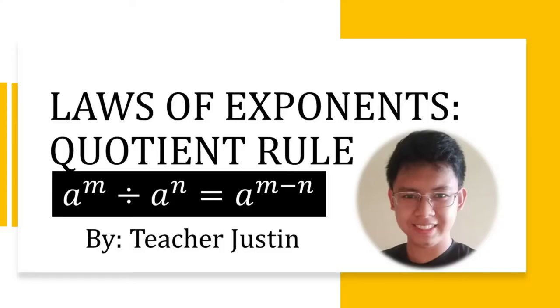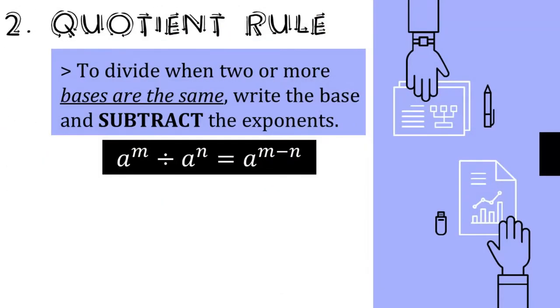Good day everyone, welcome to Math with Teacher Justin. On today's topic we're going to discuss the Laws of Exponents — Quotient Rule. The quotient rule will only apply if and only if the operation is division and they have the same base. Our process is to copy the base and then subtract the exponent — the exponent of the numerator minus the exponent of the denominator, or the exponent of the dividend minus the exponent of the divisor.